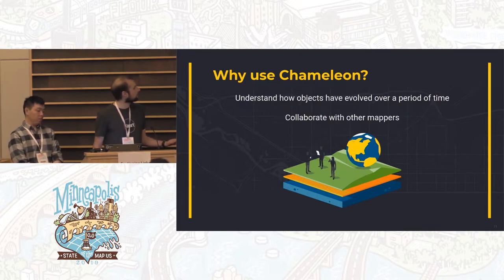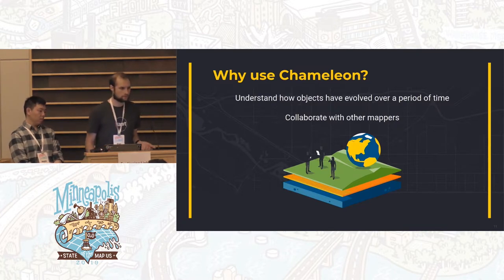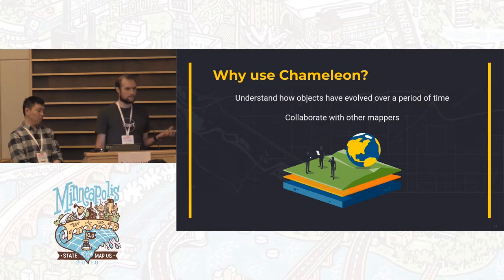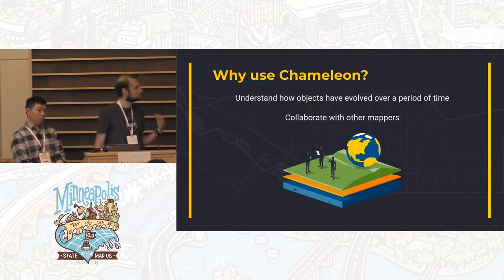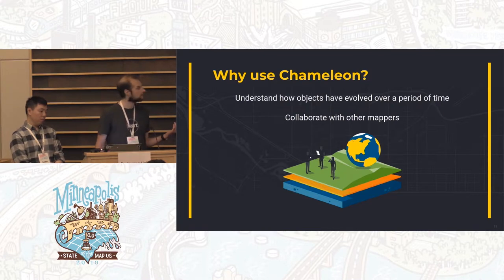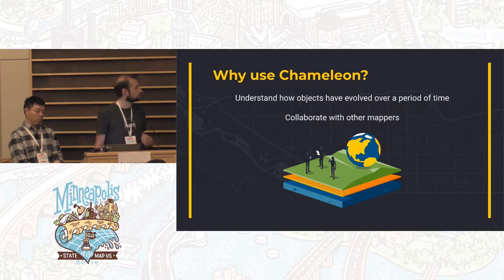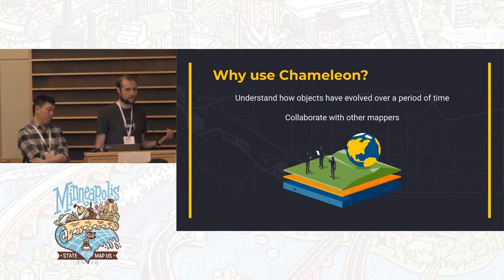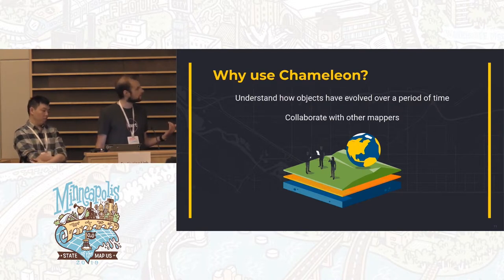We use it to understand how objects evolve over a period of time. We're usually looking at specific regions — maybe the highways in a region or the ref tags — making sure that changes are logical, whether they're internal changes or external changes from the community. We also use it to identify other mappers, see who's interested in what you're working on, and collaborate with them.